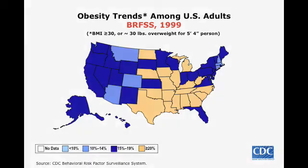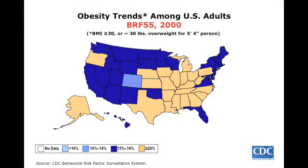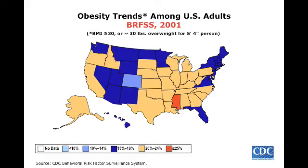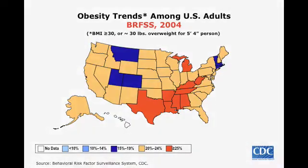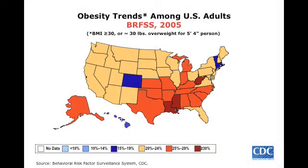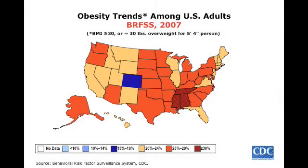In 1998, 1999, 2000, and here in 2001, we now have our first state with a prevalence greater than 25%. In 2002, 2003, 2004, and 2005, we now see some states greater than or equal to 30%. And here in 2006 and 2007, you can see how things have changed drastically across the country and obesity is becoming an epidemic.